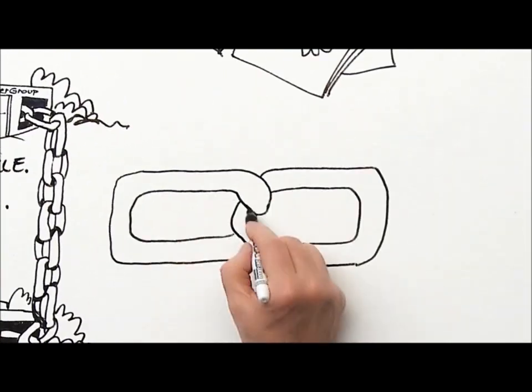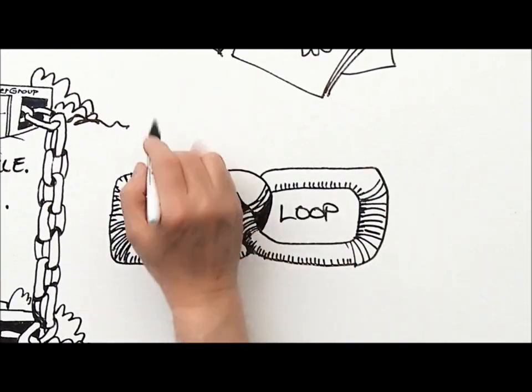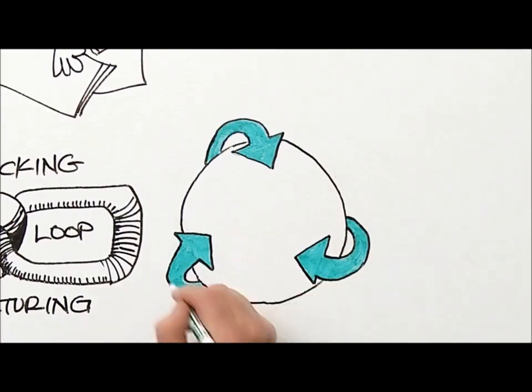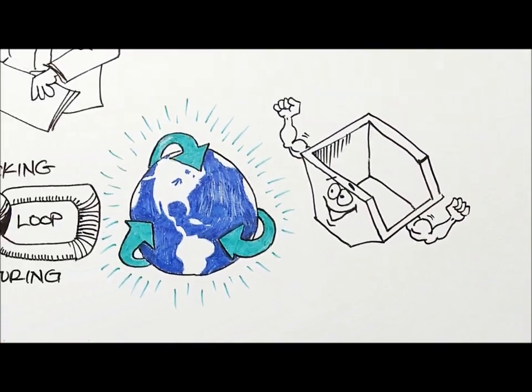By helping organizations maintain interlocking closed-loop manufacturing, Intergroup International is keeping the planet in great shape. And dumpsters, too.